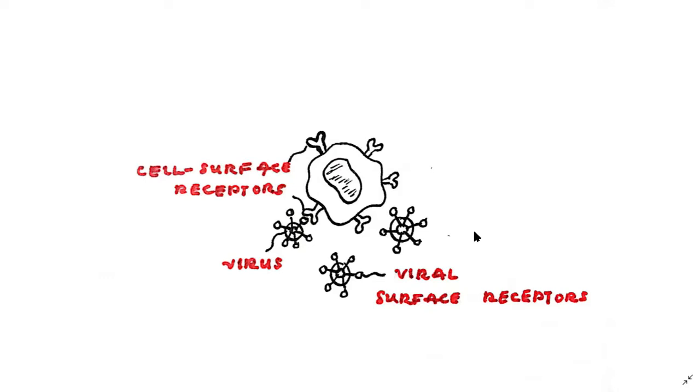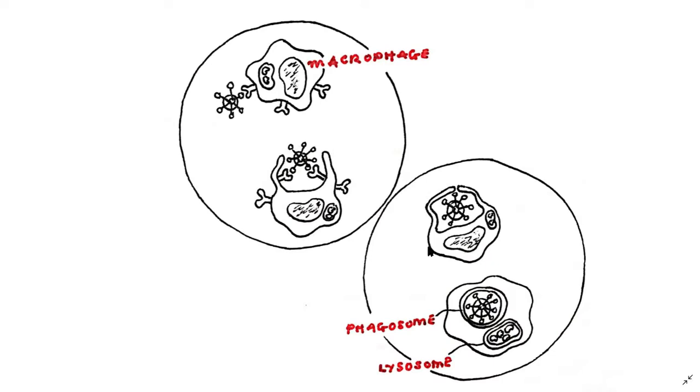Once this happens the infected cell is identified and destroyed by other cells of the immune system in order to stop viral replication and infection. Instead of moving the large item, in this case the microbes, across the plasma membrane which might damage the membrane permanently, phagocytosis uses extensions of the cytoplasm called pseudopods to surround the particle and enclose it in a membrane.